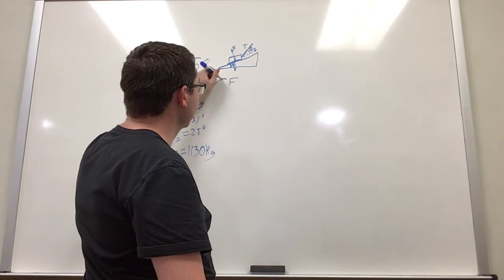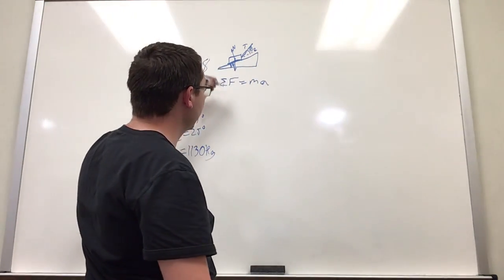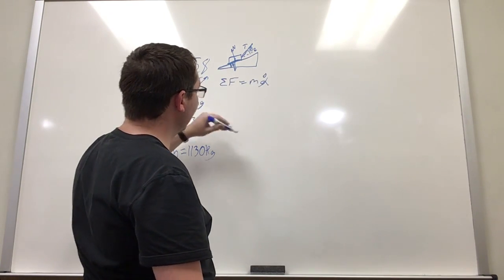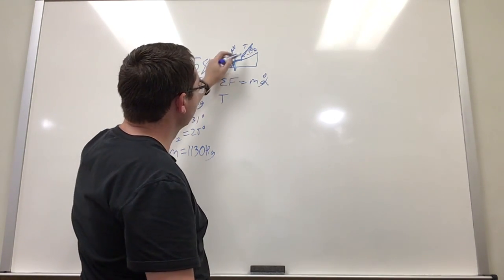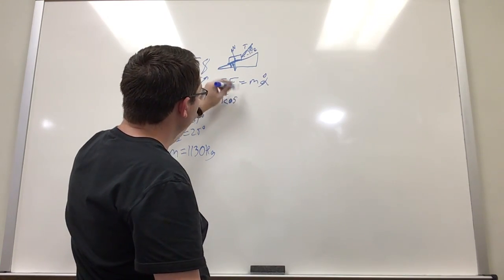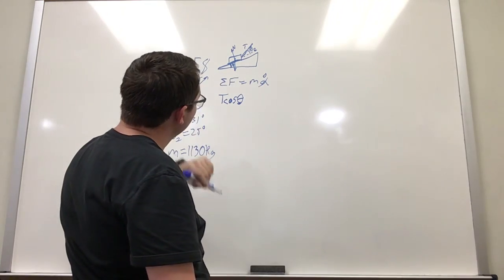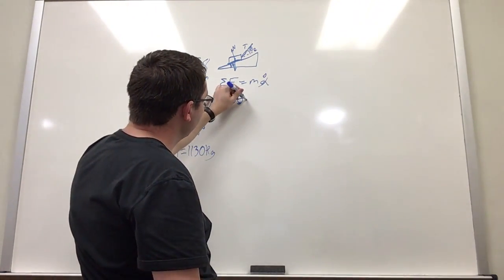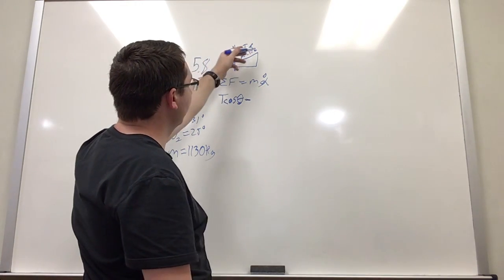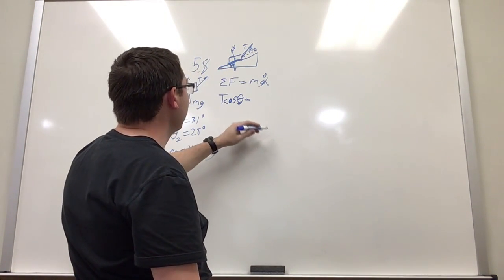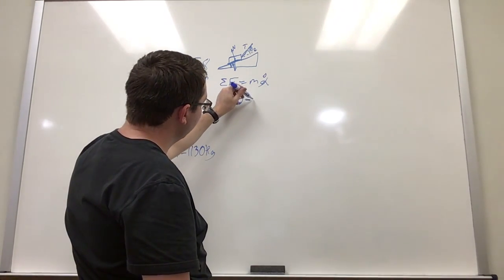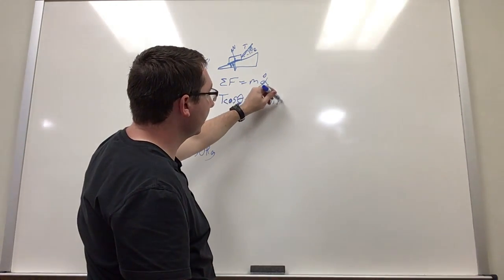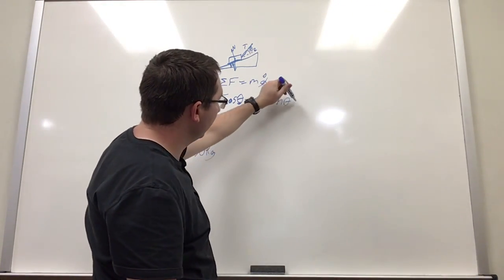So using Newton's second law, we know that the sum of the forces is going to be equal to the mass times the acceleration, and we know that the acceleration is going to be zero, so this whole side is going to be zero. We know that the tension from cosine of this angle is going to be acting on it, and for the x-axis, we also have the mass times gravity times sine of the angle of the ramp, and that's going to be equal to zero.